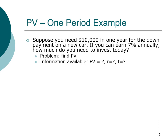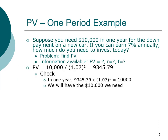With present value we can actually check our answer. If we take $9,345.79 and earn seven percent interest on it, we should get back exactly $10,000. So we can verify that we did the calculation correctly.